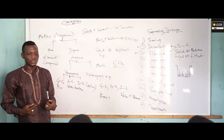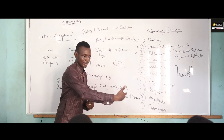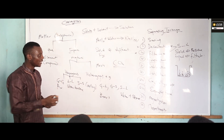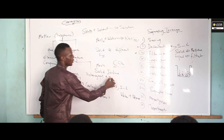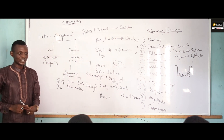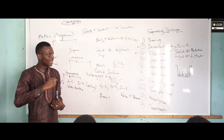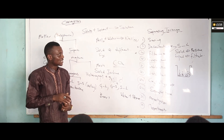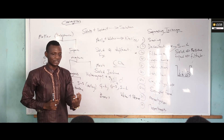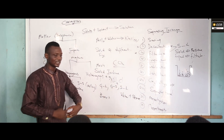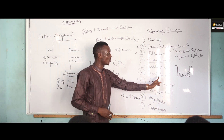The next one is sublimation. Sublimation is used to recover a solid substance which, when heated, turns directly to gas without passing through the liquid state. For example, solid iodine, ammonium chloride, and camphor. When you are having such a solid in a mixture, the easiest way to separate it is to use sublimation — just heat the solid mixture and allow the subliming solid to escape as gas, leaving behind the remaining substances.